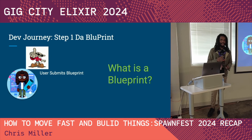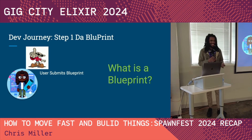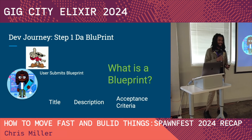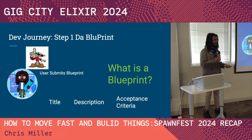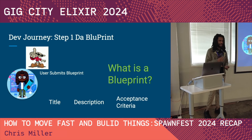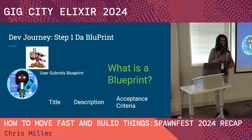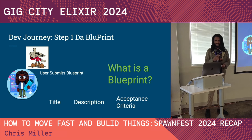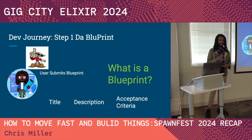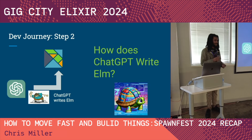We came up with the idea that a blueprint would be: the title of your web application, a description of what that web app is supposed to do, and acceptance criteria — you can think of this like QA instructions, like 'you should be able to click on this button and an X appears on the screen.' We figured that's enough information for the large language model to actually try to build an app reasonably.